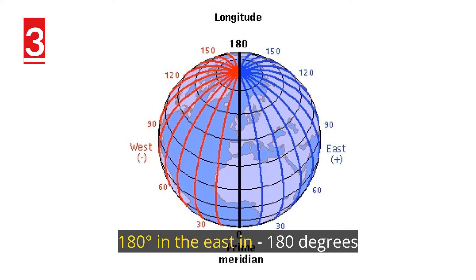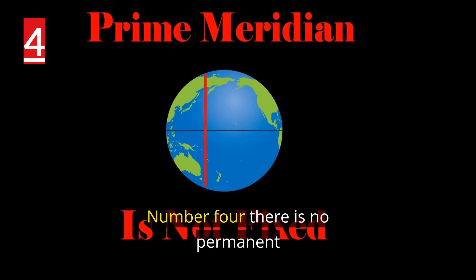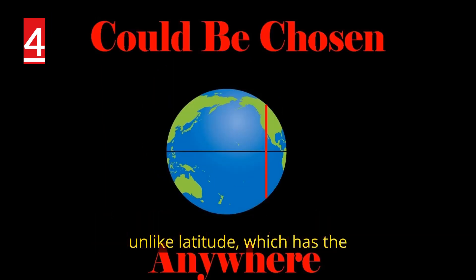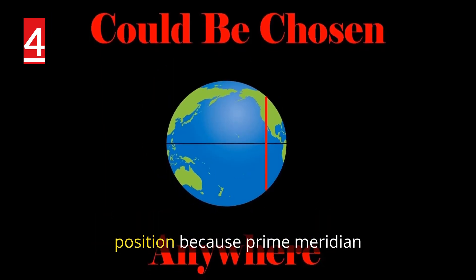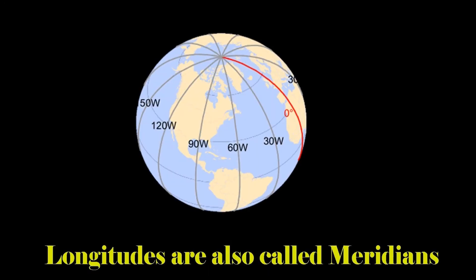Number three: the farthest line is plus 180 degrees in the east and minus 180 degrees in the west. Number four: there is no permanent starting point for longitude, unlike latitude which has the equator as a natural starting position, because Prime Meridian could be chosen anywhere.